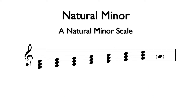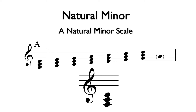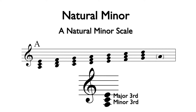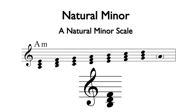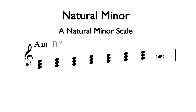Now that we have determined the notes of the chords in A natural minor, we can name each of the chords. Since the root of the first chord is A, this is some type of A chord. By determining the intervals between the root and the third, and the third and the fifth, we can name the chord. From A to C is a minor third, or three half steps, and C to E is a major third, or four half steps. Therefore, we have an A minor triad. For the next triad, we have B to D as a minor third, or three half steps, and D to F as a minor third, again three half steps. Therefore, this is a B diminished triad.